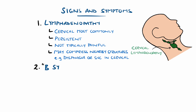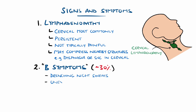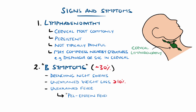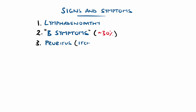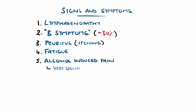Systemic symptoms, known as B symptoms, are present in around 1 in 3 cases, and include drenching night sweats, unexplained weight loss of more than 10% usually in the last 6 months, and unexplained fever. A particular fever pattern seen in Hodgkin's lymphoma is Pel-Ebstein fever, where there is a cyclical rise and fall in body temperature over roughly 1-2 weeks. Other manifestations include itching, fatigue, and alcohol-induced pain, which is a very specific but not sensitive sign, meaning it is suggestive of Hodgkin's but not all patients will show the symptom.